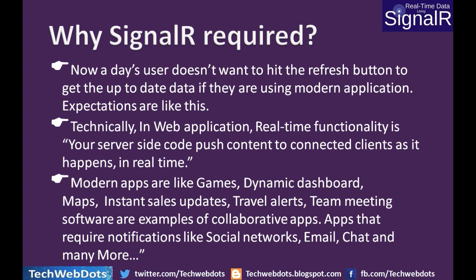For example, if there is a stock market change, you will see the changes in a fraction of seconds. Modern applications like games, dynamic dashboards, maps, instant sales updates, travel alerts, team meeting software, and flight updates are examples of collaborative apps. Apps that require notifications — like social media networks, email, chat, and many more — also rely on this. You can see how useful SignalR is, because everywhere we need an immediate notification and immediate real-time updates.